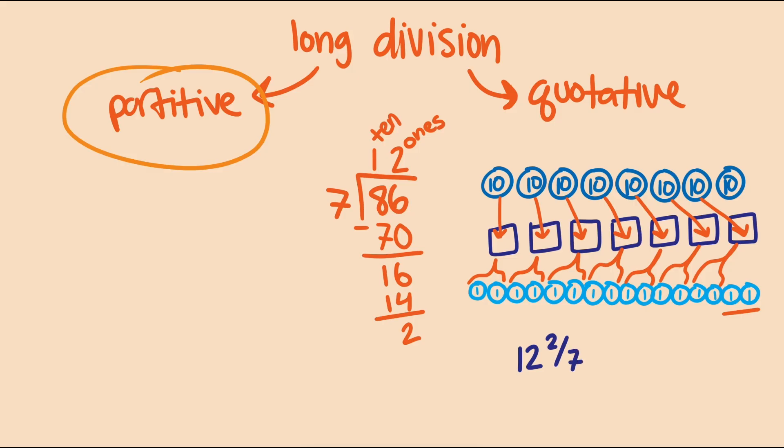Or if we choose to extend the division to find a decimal approximation, we can continue the process. How to share 20 tenths among 7 groups? Each gets 2 with 6 tenths remaining. Now how can we distribute 60 hundredths across 7 groups? Each gets 8 with 4 remaining. And we can just keep on going.